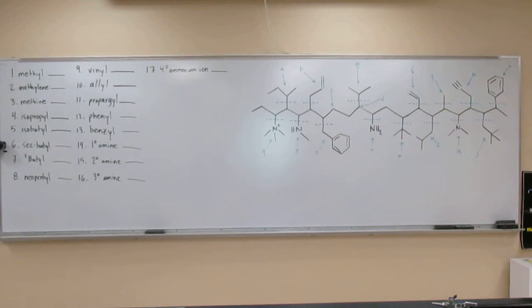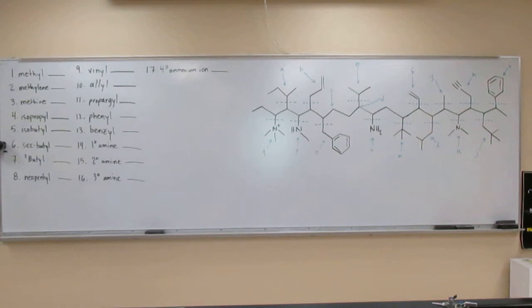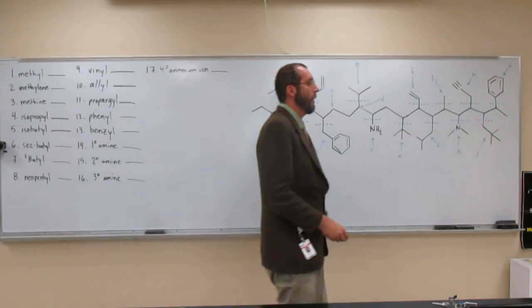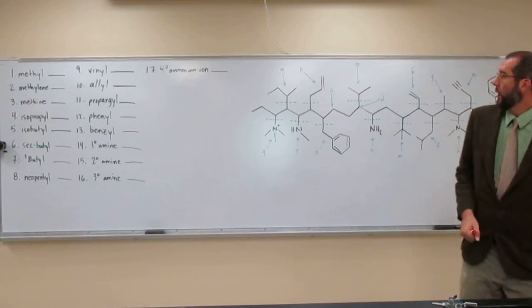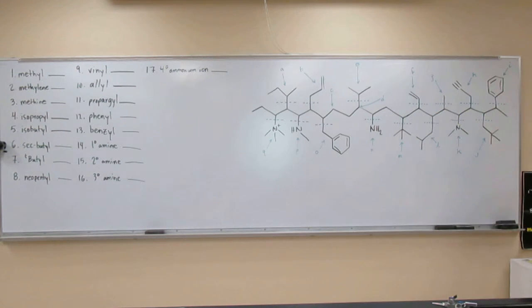Okay, so let's do an example where we're identifying the substituents that potentially could come off a carbon chain. I have 17 different substituents that you should know by now, and we're going to look at this particular carbon chain where all 17 of them are placed, and we're going to identify those particular substituents by the numbers relative to their names.